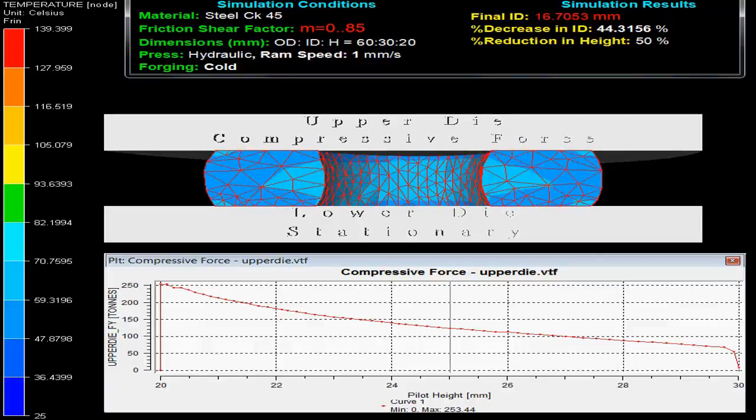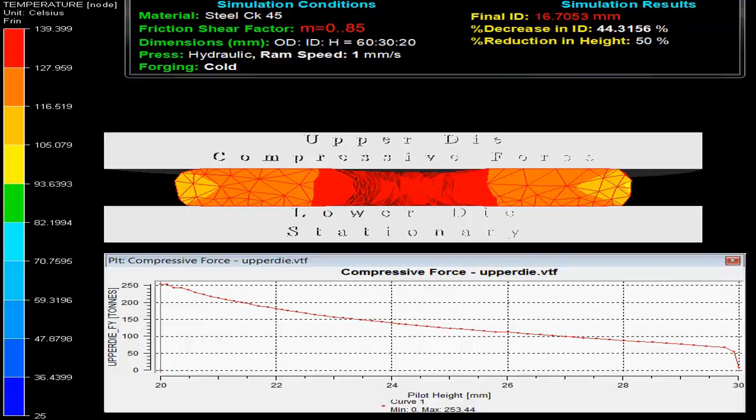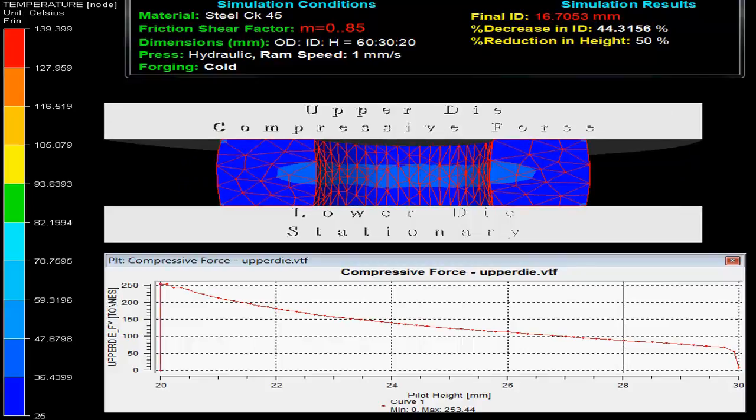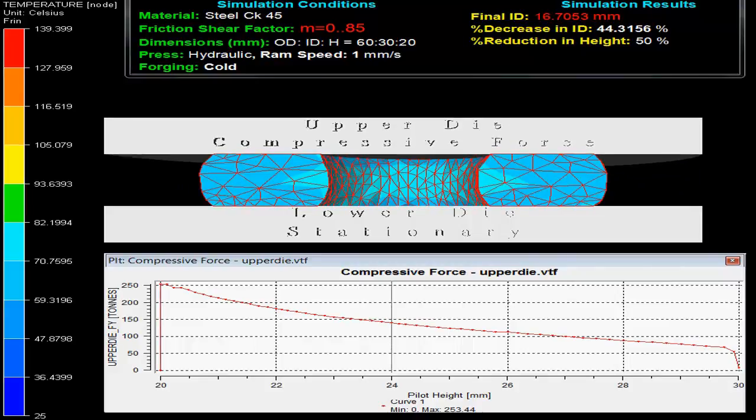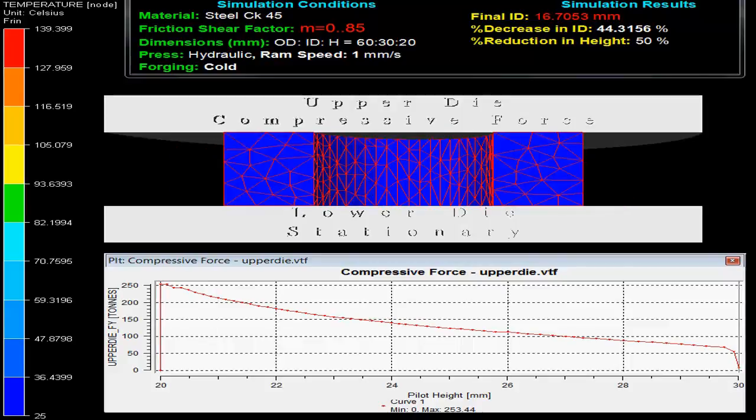Ring compression test has been widely used as a test to evaluate the friction condition in metal forming process. The video shows that a short ring specimen is plastically compressed between two flat dies with lower die stationary and upper die movable.